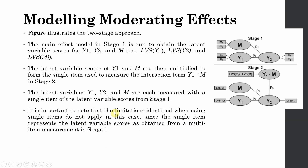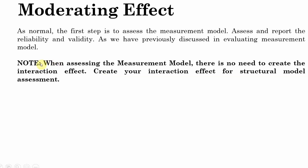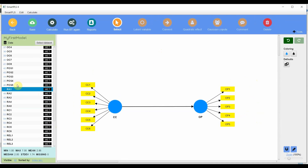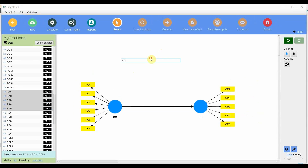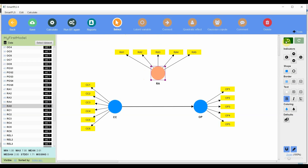It is important to note that the limitations identified for single-item scales do not apply here, because these latent variable scores were derived from multiple items in stage one. The first step is to assess the measurement model, which we have already discussed. When assessing the measurement model, there is no need to create the interaction term — create the interaction term only for structural model assessment. Now let's start our moderation analysis: role ambiguity moderates the relationship between collaborative culture and organizational performance.